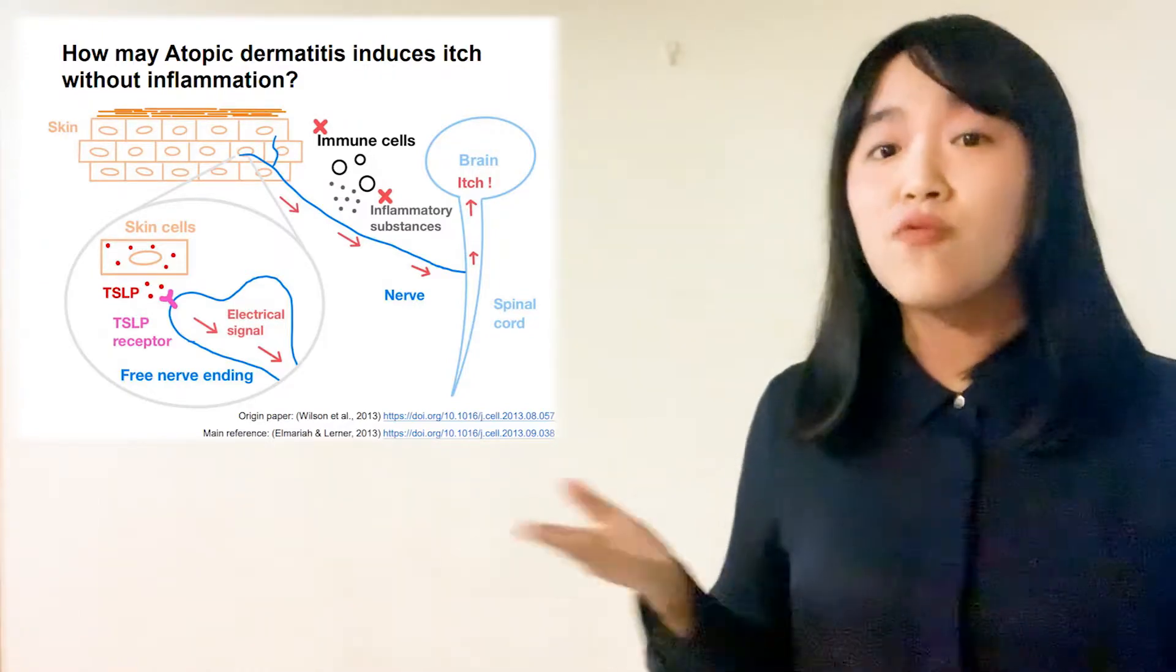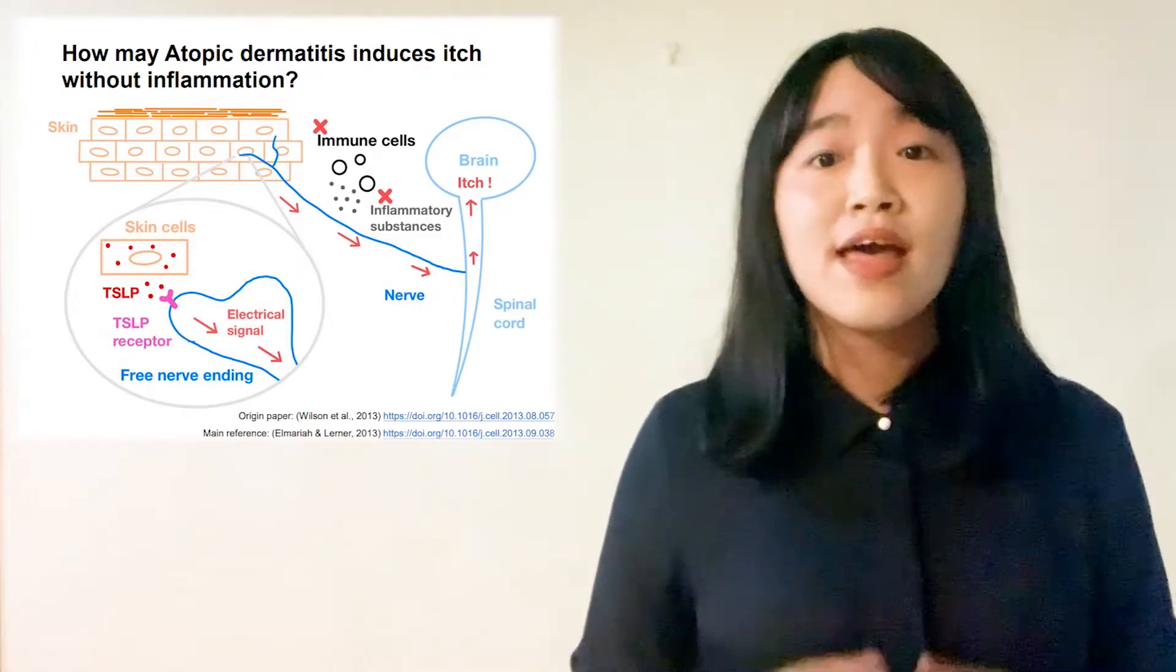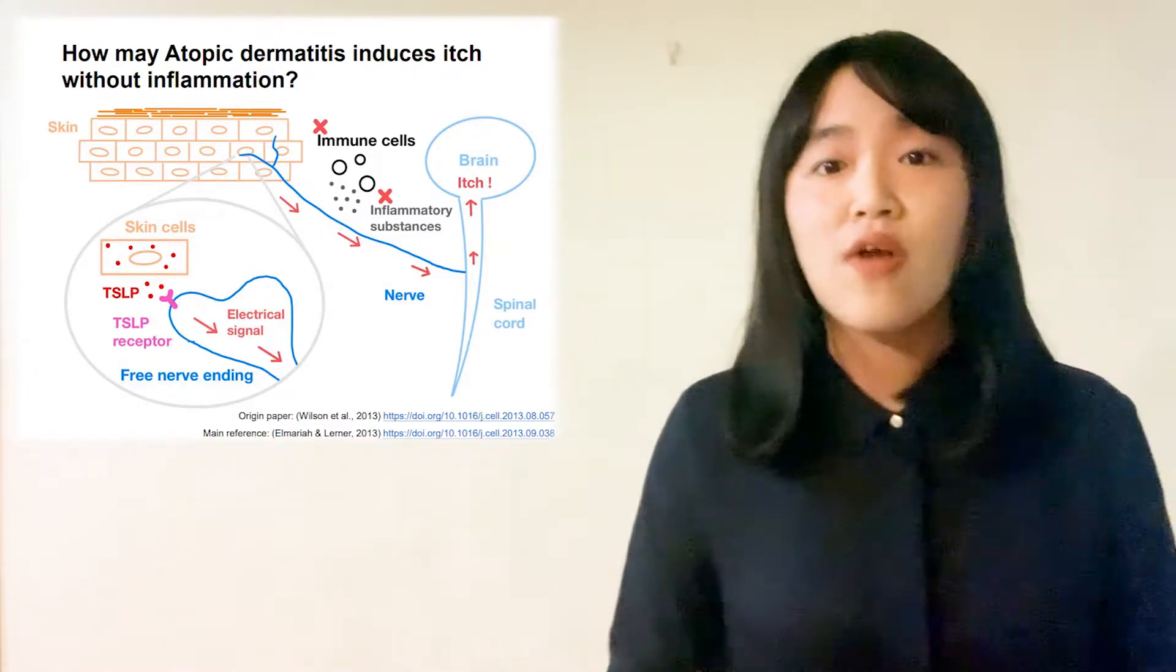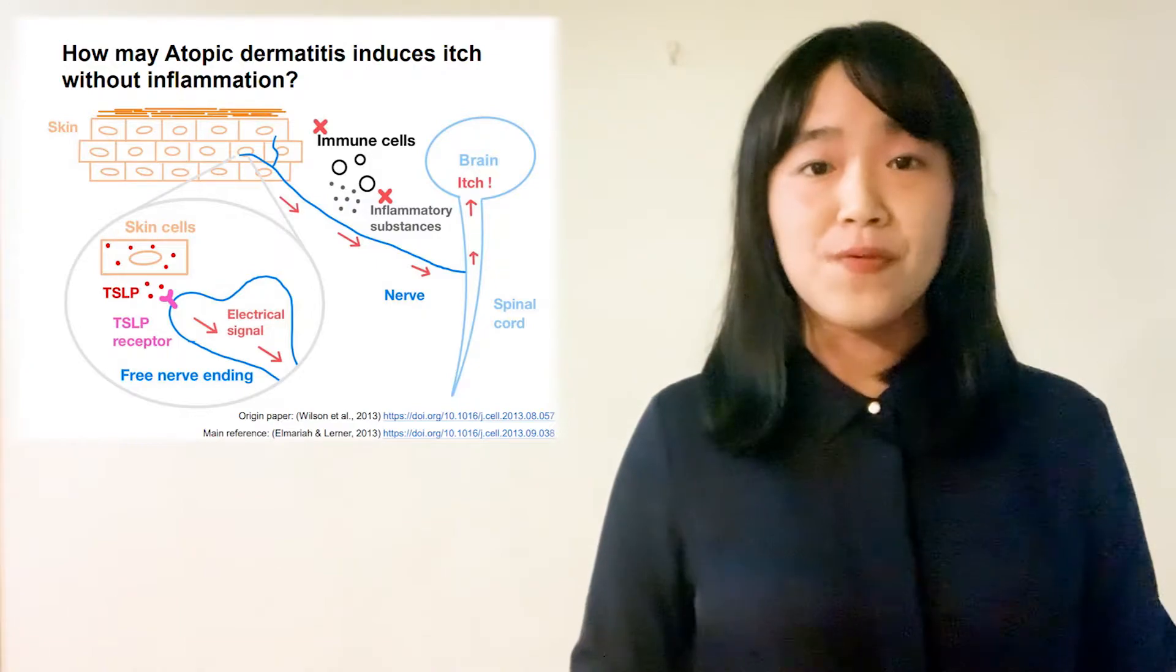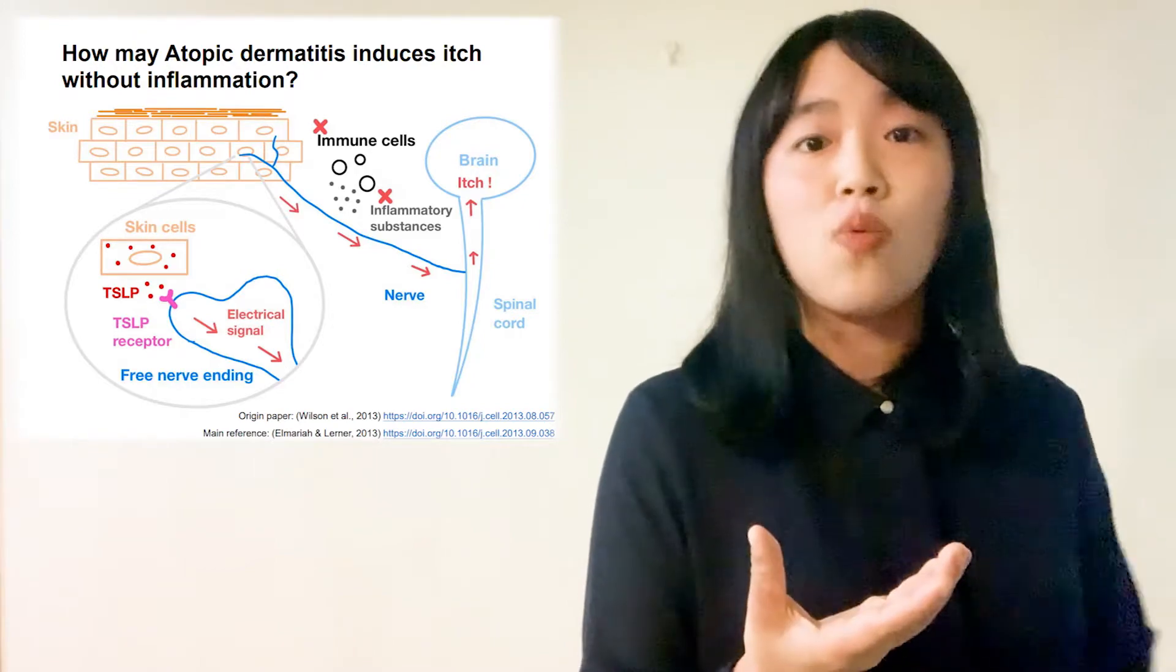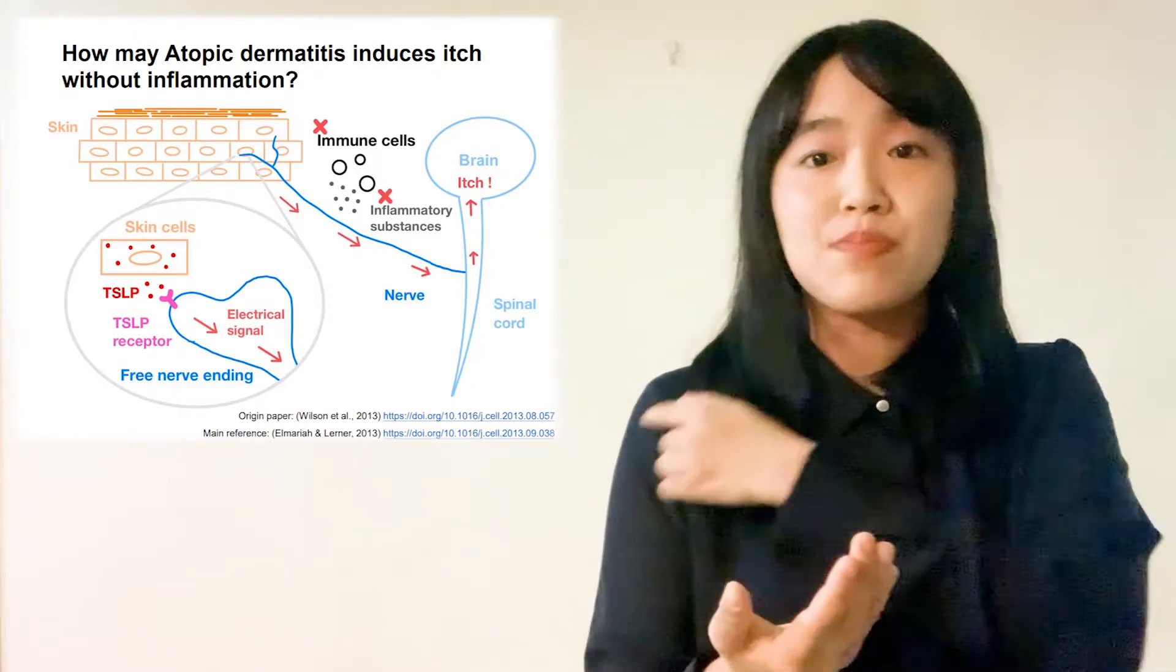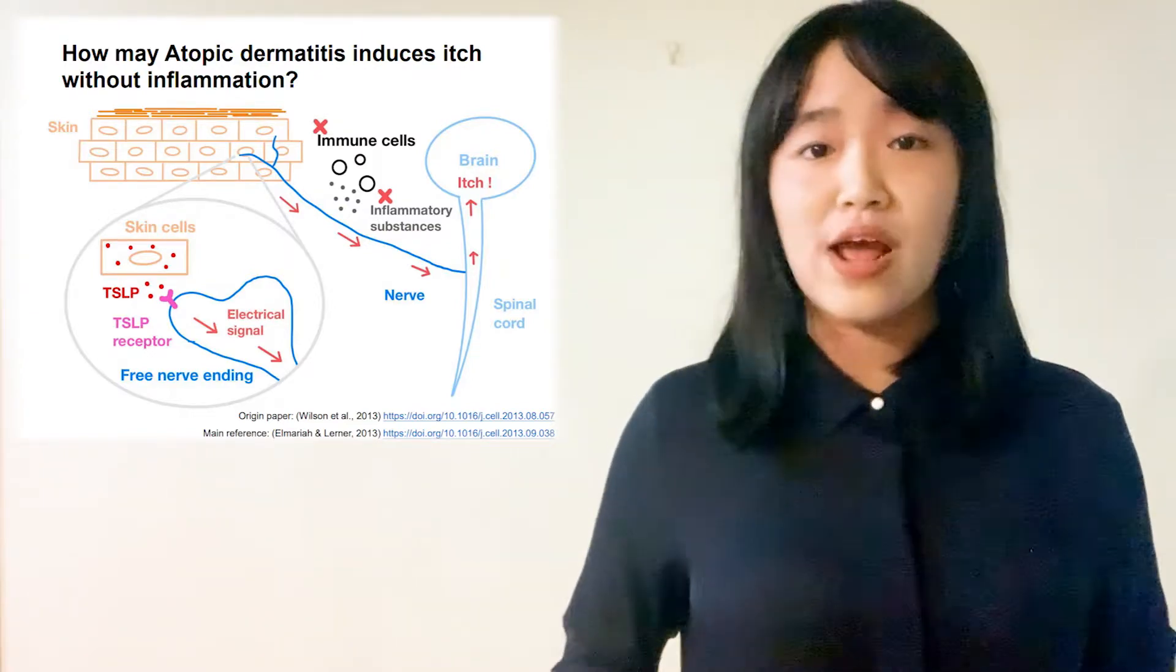The research of Wilson and her colleagues may give us some new insight. They found that a chemical called TSLP, which is released from our skin cells, can directly activate a kind of neuron. These neurons have a very special receptor that can induce electrical signals while TSLP is binding. And this signal can be transmitted along the nerve and tell the mouse in the experiment to scratch, scratch and scratch.